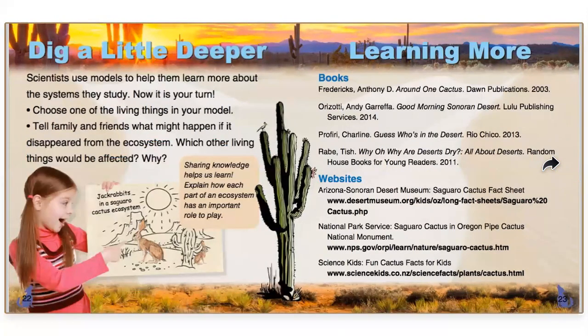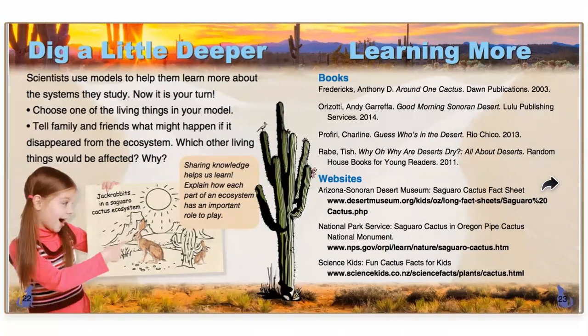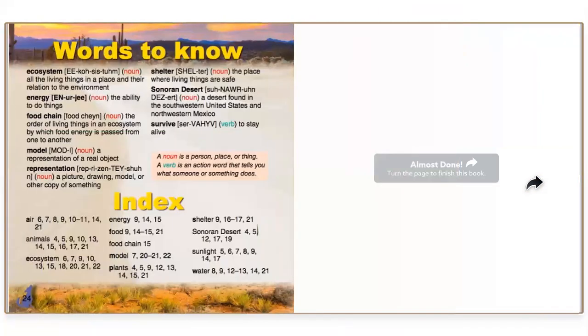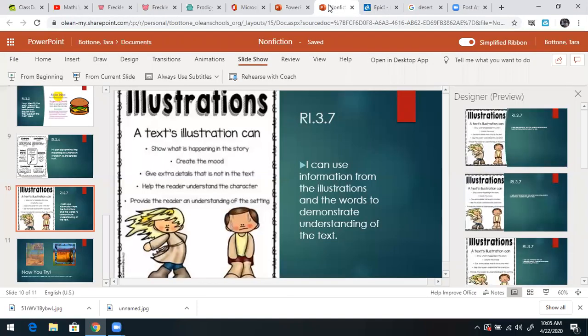Dig a little deeper. Scientists use models to help them learn more about the system they study. Now it is your turn — choose one of the living things in your model and tell family and friends what might happen if it disappeared from the ecosystem. Which other things would be affected and why? Also, in the very back of the book are more vocabulary words with their definitions, and those are super important — they tie right in with our ecosystems unit.